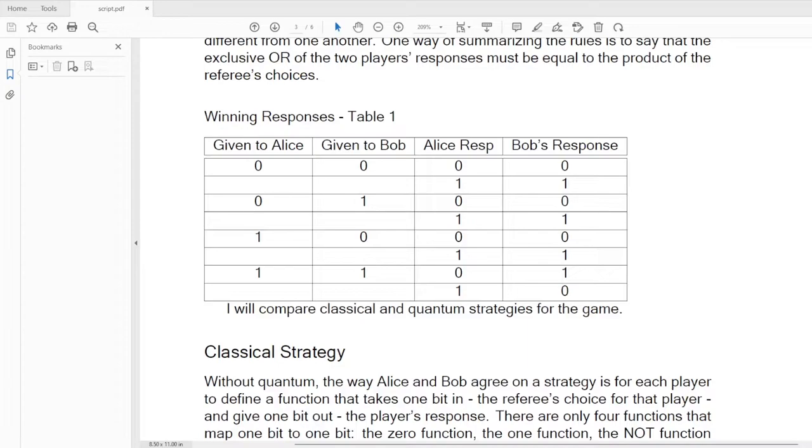One way of summarizing these rules is to say that the exclusive OR of the two players' responses must be equal to the product of the referee's choices. So in this table, I show the winning responses.